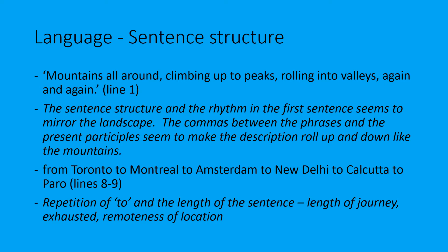Another good example of sentence structure is on lines 8 to 9, where she talks about the long trip she's taken. She says 'from Toronto to Montreal to Amsterdam to New Delhi to Calcutta to Paro,' and that repetition of 'to' and the length of the sentence could emphasise the length of the journey, how tedious it was, how exhausted she is. But also, I think, the remoteness of the location - on one hand that might daunt her a little, but maybe she's also excited about going somewhere completely out of the way.